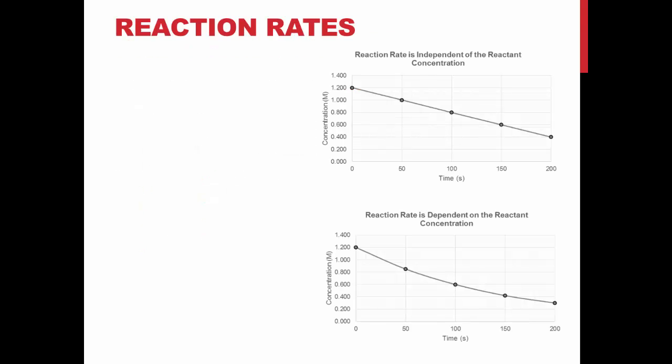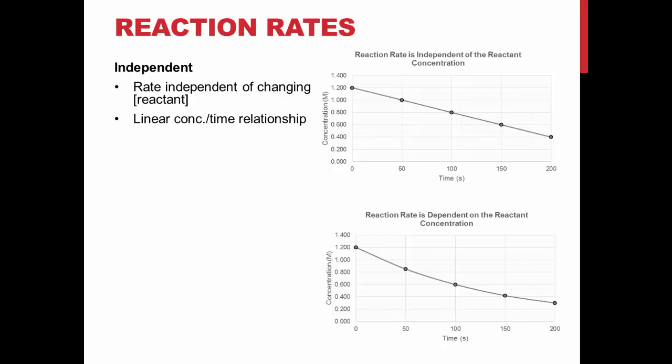Reaction rates can be classified into two categories, the first being independent. In an independent reaction, the rate is independent of the change in concentration of a reactant, and we see a linear concentration over time relationship as depicted on the graph. This tells us that the amount of reactant used per unit time does not change.